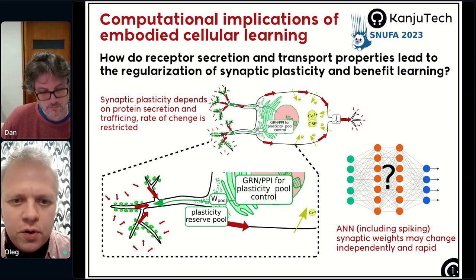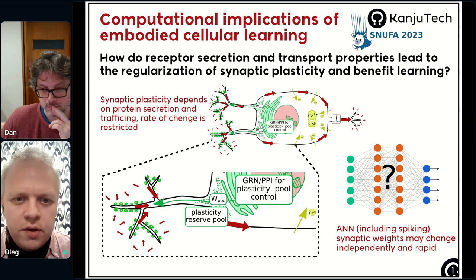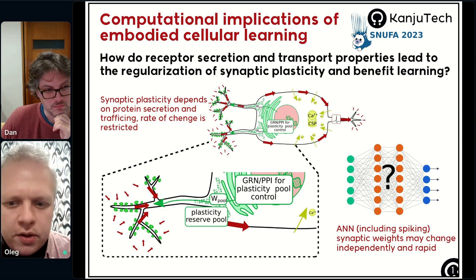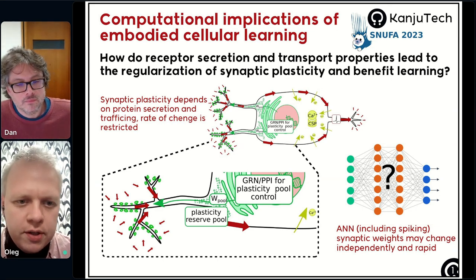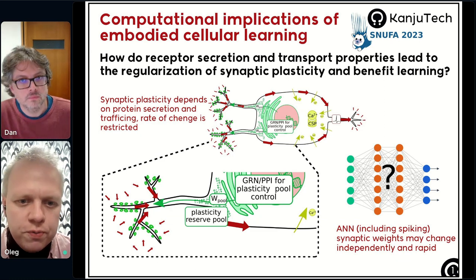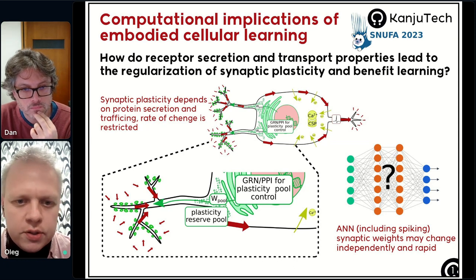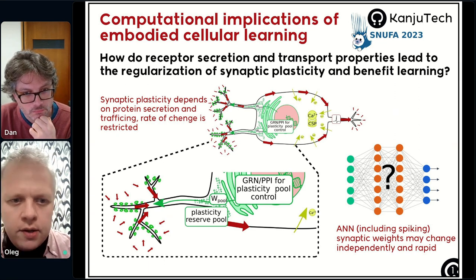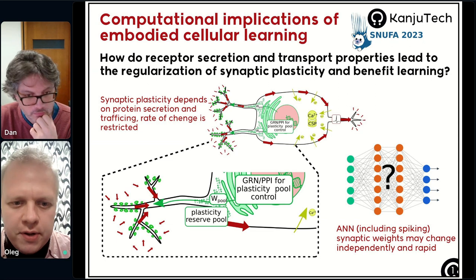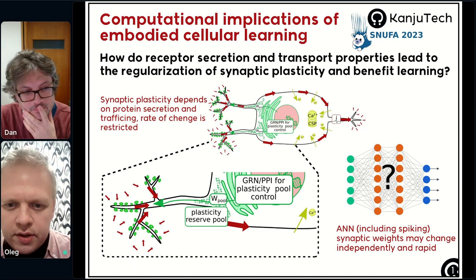In my poster I would like to discuss the nature of the embodiment of learning inside neural cells — what kind of restrictions it has and what those restrictions might mean for learning and neural computation. Biological neurons depend very much on complex protein machinery responsible for the change of synaptic weights — like synaptic channels, scaffolding proteins — all of which have to be secreted and transported, which is a very complex matter.